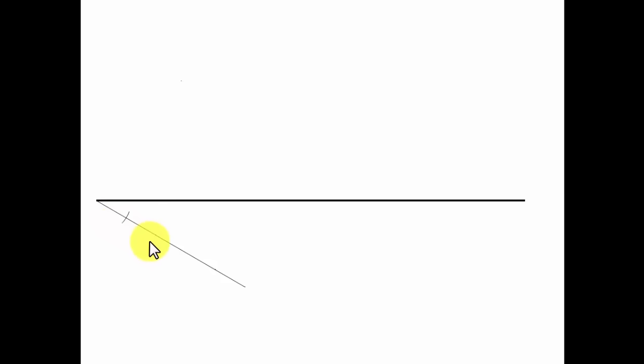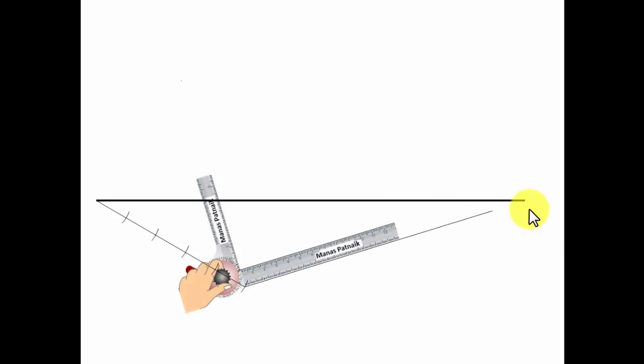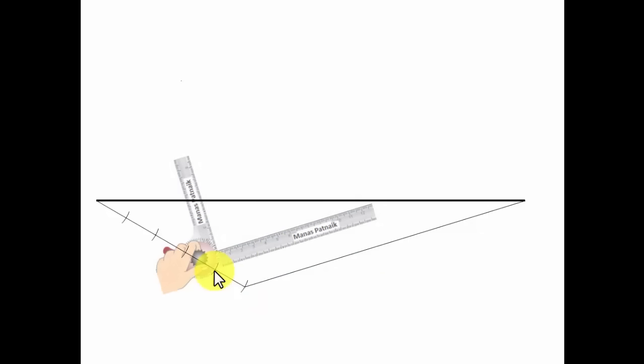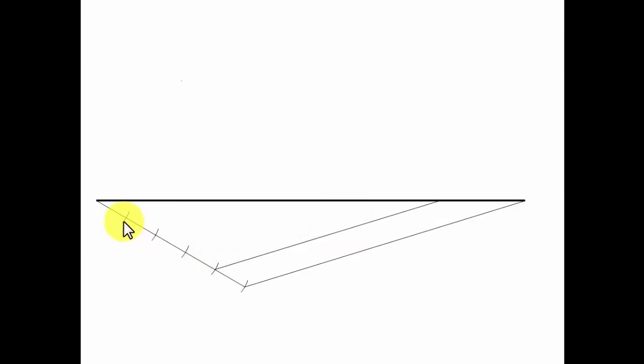To divide the line into five equal parts, I'll draw another line at any angle and of any suitable length. Using a radius of one centimeter, I'll put arcs starting from the first point as center — first, second, third, fourth, and fifth arc. The next step is important: use a mini drafter, join the last point to the end of the base line, tighten the screw, then move the drafter to each arc point and draw parallel lines. All lines drawn are absolutely parallel to each other, and the base line gets divided into five equal parts.